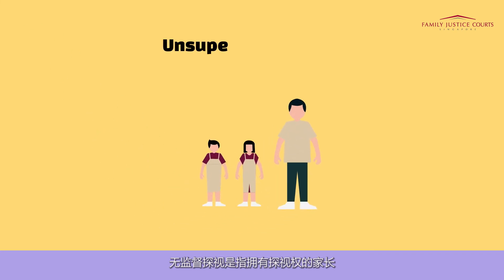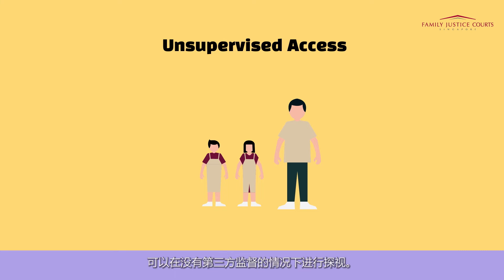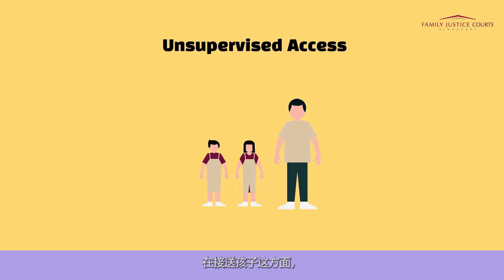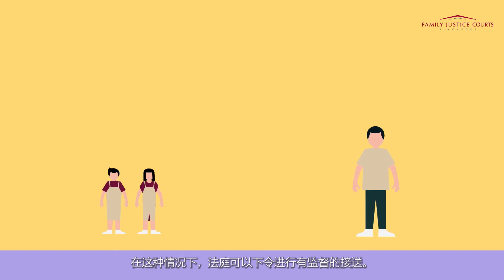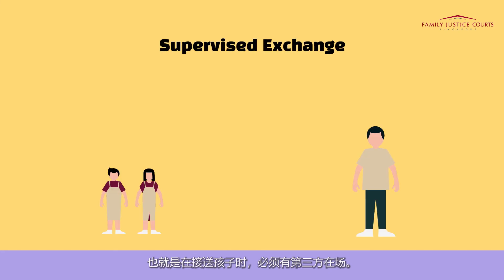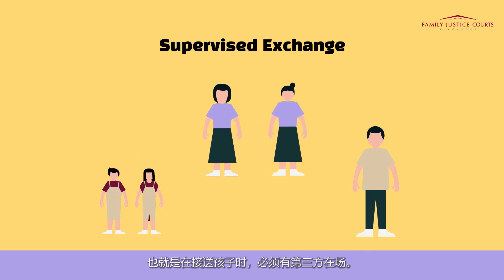Unsupervised access is where the access parent can enjoy his or her access time without the supervision of a third party. While access may be unsupervised, there may be situations where the handing and taking over of the child between the care and control parent and the access parent require some assistance. In such situations, the court may order what is known as supervised exchange, where a third party is to be present during handover and takeover.